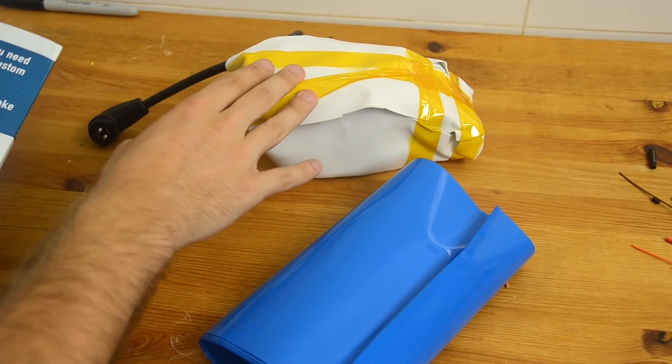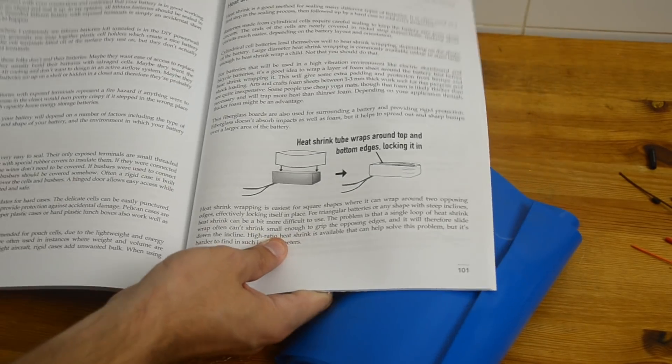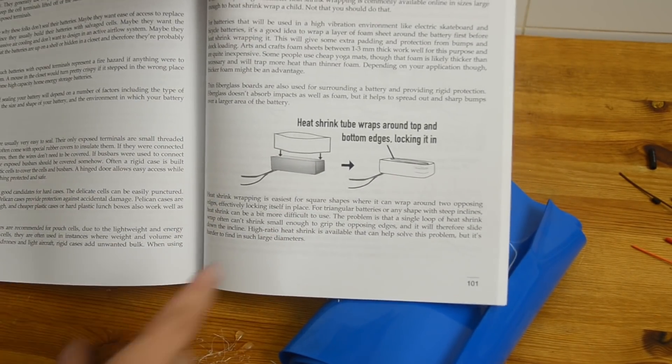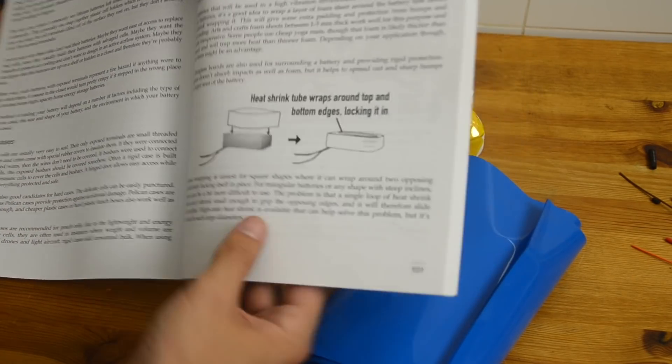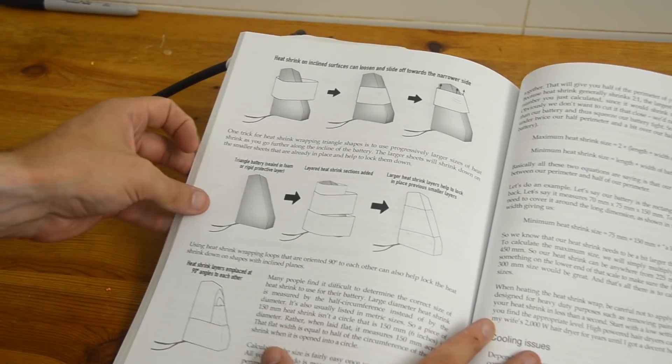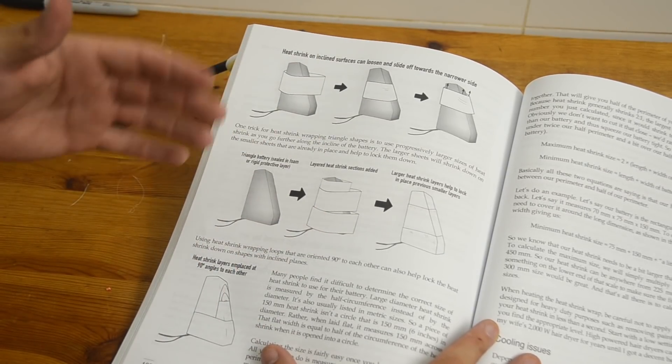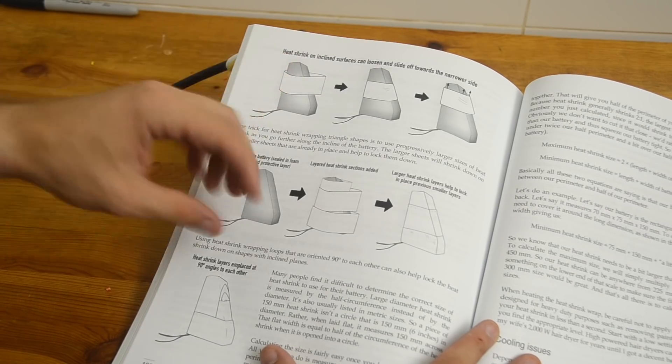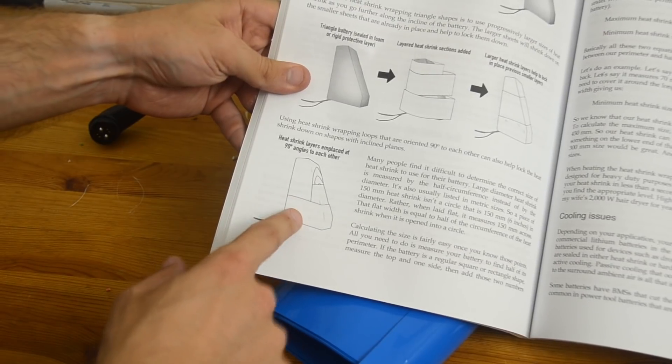So now it's time to start sealing our battery in heat shrink. Now if you open my book up to page 100 or chapter 12, we can start looking at the heat shrink section. When you have square batteries or rectangular batteries, it's so much easier to heat shrink them because you can just use a single piece and it just wraps right around the corners. When you get to these odd shapes, that's where it gets a little trickier. So one of the things I describe in my book is that the best way to do this is to use multiple pieces of different sizes of heat shrink, cascading down the shape of the slope of the battery. And that way they can lock into each other.